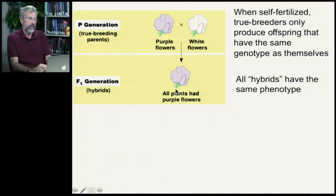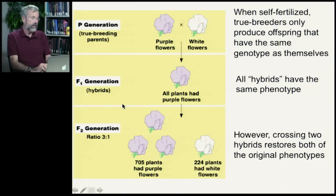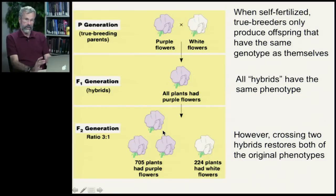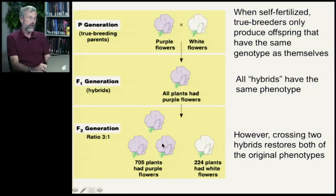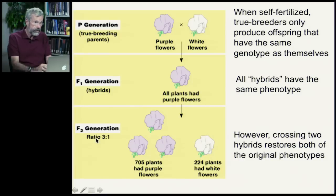Looking at the phenotype of the F1 hybrids, all of them had the same physical characteristic — they were all purple. Then, crossing two of these F1s and observing their offspring, Mendel discovered something profound: even though the F1s were all purple, crossing two hybrids produced white flowers again, alongside purple flowers. The white trait had disappeared in the F1 generation and reappeared.